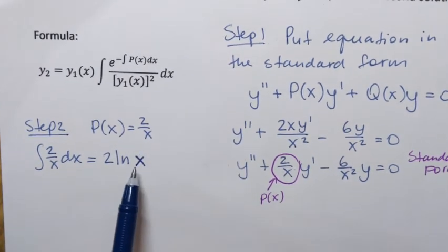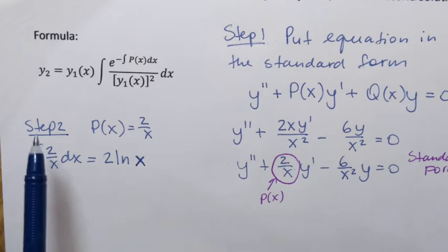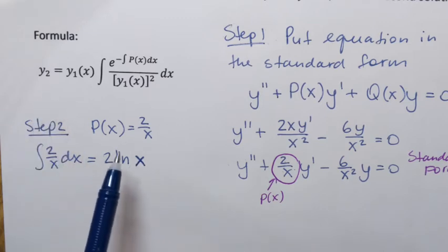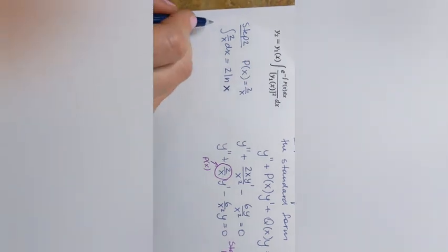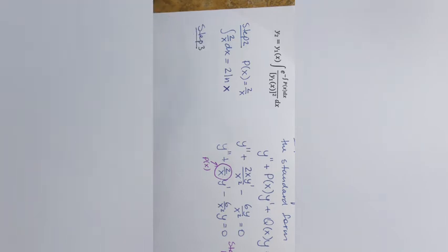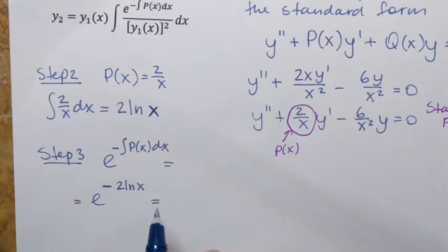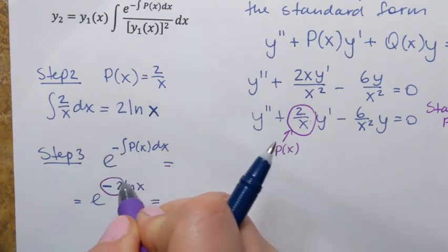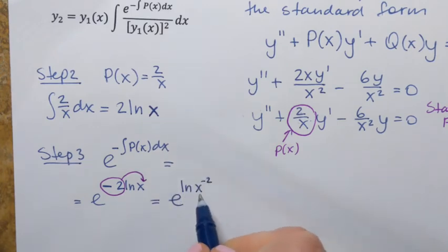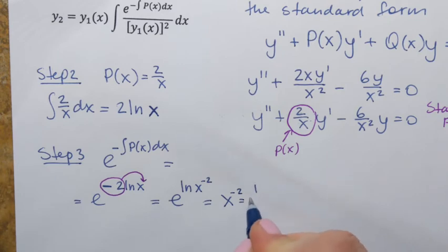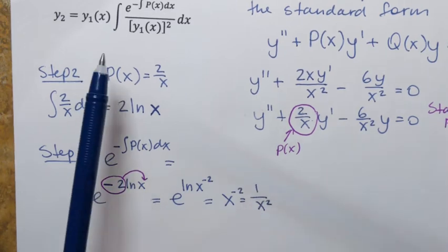Note that I'm not using absolute value here; I'll note at the end that this solution is valid where x values are positive. Now in step 3, we find the numerator of the fraction. We take e to the power of negative 2 ln x, which equals e to the power ln of x to the negative 2. Using properties of logarithms, that simplifies to x to the power negative 2, which is the same as 1 over x squared. That's the numerator of the fraction.